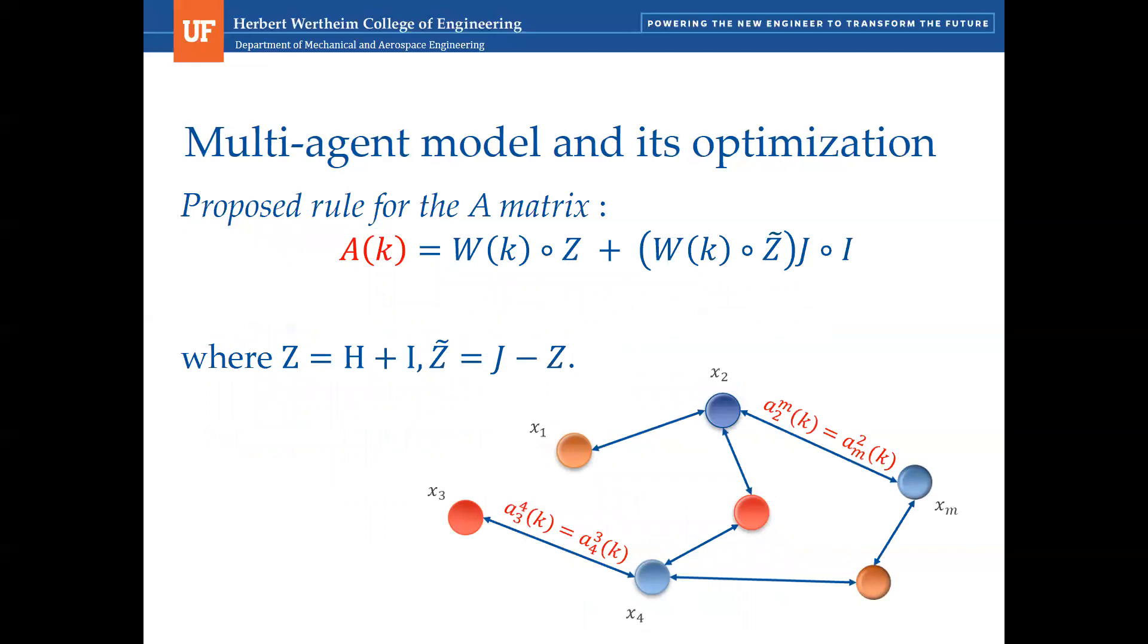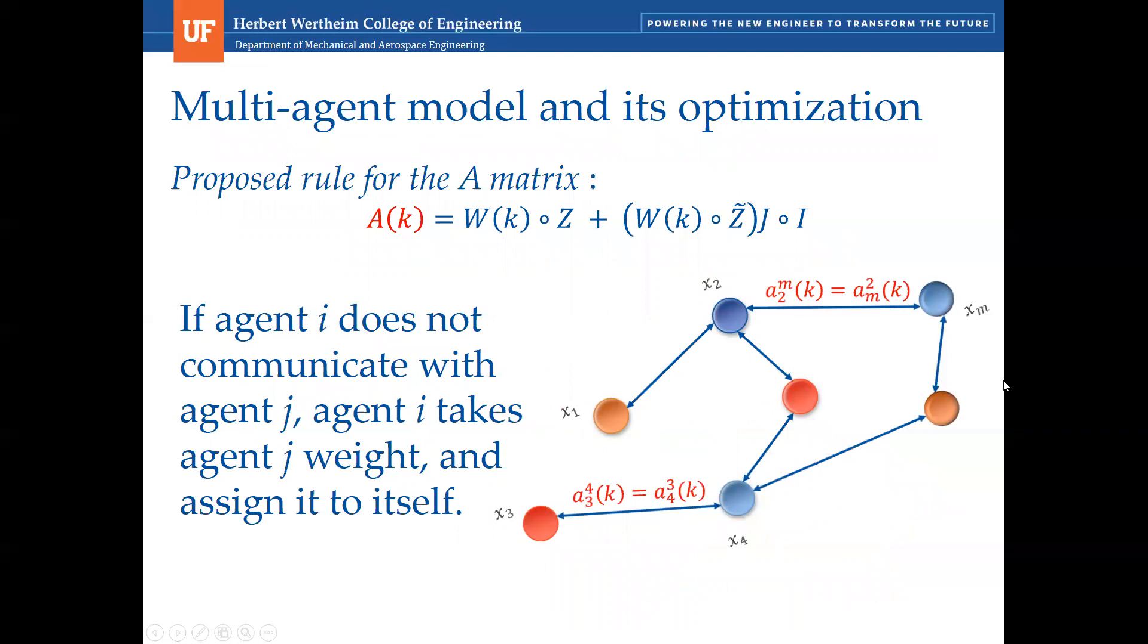In line with the multi-objective concept, our algorithm uses the priority vector W to quantify the importance of information received to update x. H is the adjacency matrix, I the identity matrix, and J is the all ones matrix. The proposed rule for the A matrix means that if agent i does not communicate with agent j, agent i takes agent j weight and assigns it to itself. Proceeding that way allows agent i to keep the relative importance assigned to the agents that agent i communicates with.